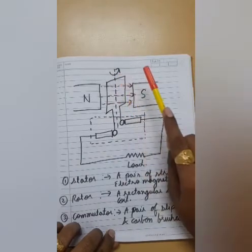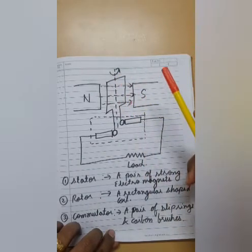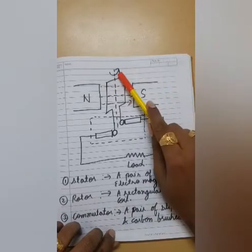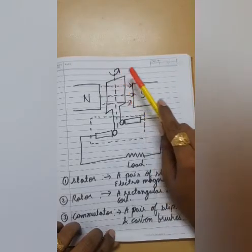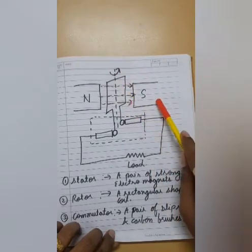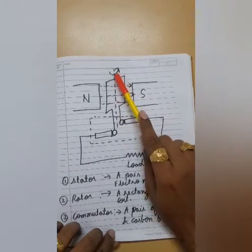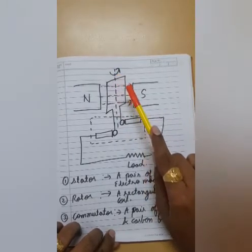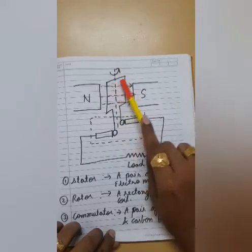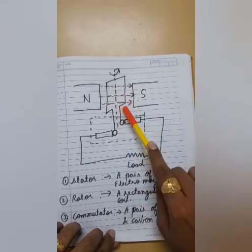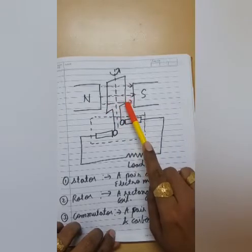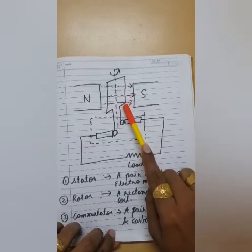Or sometimes we even take out the water from the dam, we boil it, we convert it into steam and then we strike it on the turbine because of which it rotates. There are various other methods. So finally we have to just rotate this turbine. We have various sources of rotating the turbine. And once the turbine rotates, the rotor would also start rotating. And when the rotor would rotate, there would be electromagnetic induction because it is linked with the magnetic field.